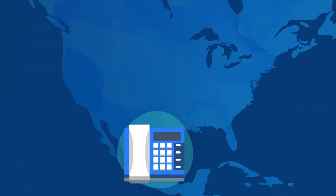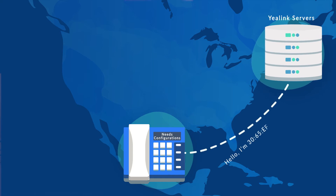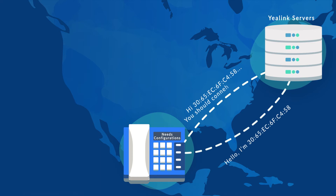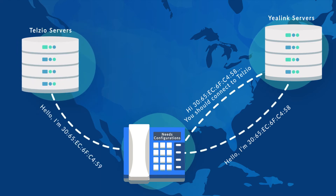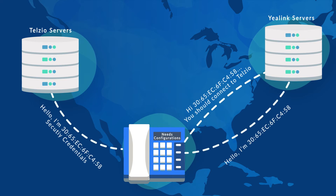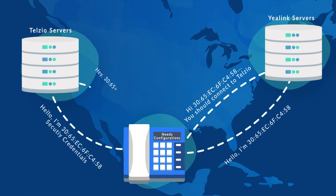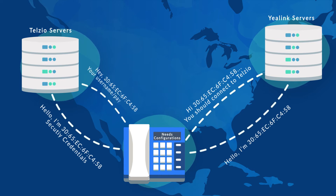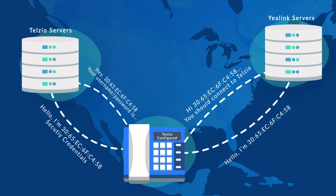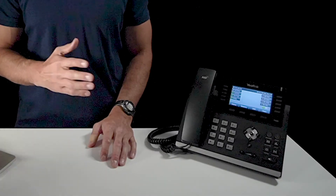Right now the phone is connecting to the internet, and because it's a brand new phone that hasn't been configured yet, it's programmed to contact YALink's configuration servers. YALink will respond back to the phone with some technical data about how to connect to Telzio's provisioning servers. The phone will then send a new request to Telzio, along with some security credentials provided by YALink to ensure its authenticity. If all that checks out, Telzio will provide all the settings we made to the phone, and it will be ready for use. Now that the phone is booted up, we can see that our device is online and ready for calling.